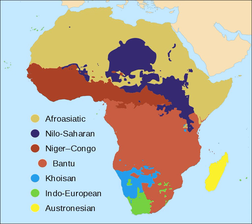Nilo-Saharan languages are spoken from Tanzania to Sudan and from Chad to Mali. There are several other small families and language isolates, as well as languages that have yet to be classified. In addition, Africa has a wide variety of sign languages, many of which are language isolates.